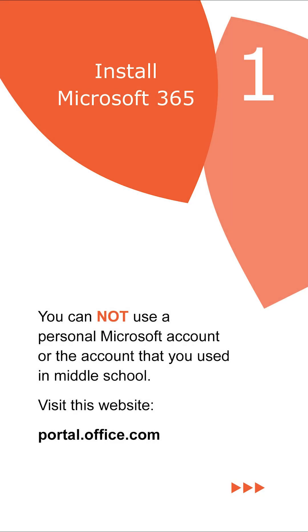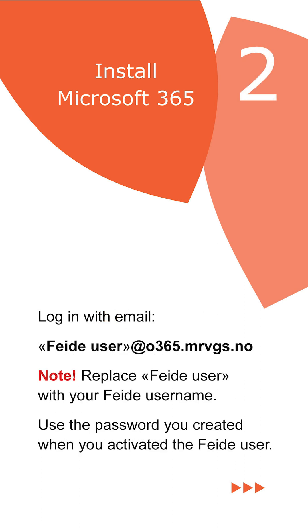Install Microsoft 365. You cannot use a personal Microsoft account or the account you used in middle school. Visit portal.office.com and log in with your email: FIDuser@O365.mrvgs.no — replace FIDuser with your actual FID username. Use the password you created when you activated your FID user.